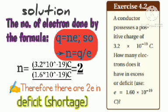The charge of the positively charged conductor is 3.2 times 10 raised to minus 19 coulombs. The charge of electron is 1.6 times 10 raised to minus 19 coulombs. Therefore, n equals 2. The number of electrons is 2.